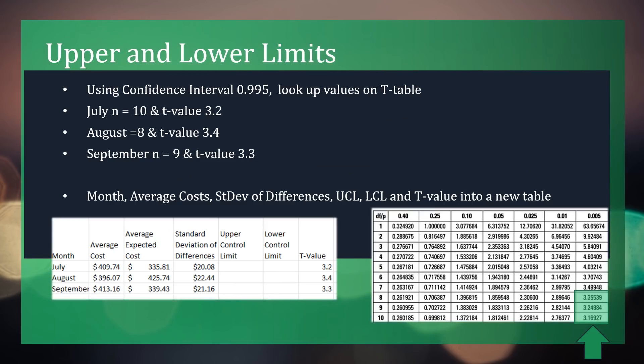To begin calculating the upper and lower limits, we must first select a confidence interval. In this case, we selected 99.5 so that the chance of making an erroneous conclusion is dropped to half a percent. Looking at the T table in the bottom right, you see that three numbers are highlighted. For the month of July, since it has 10 instances, the T value is 3.2. For August with 8 instances, the T value is 3.4.